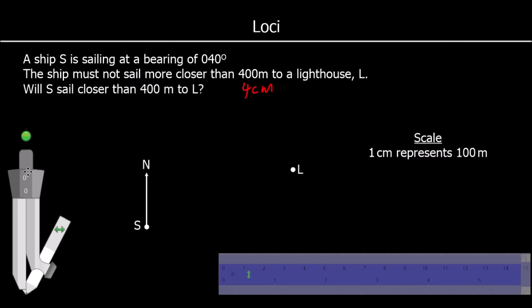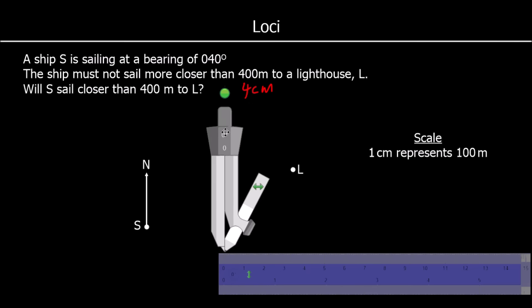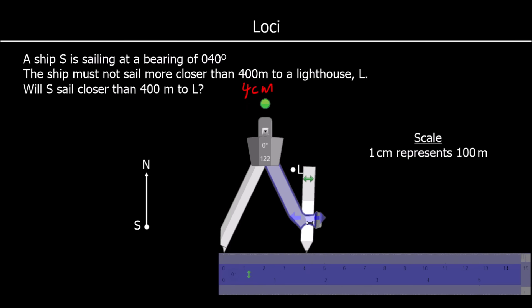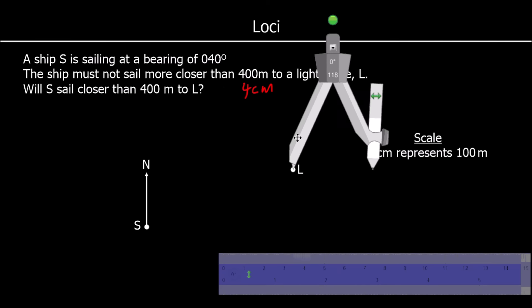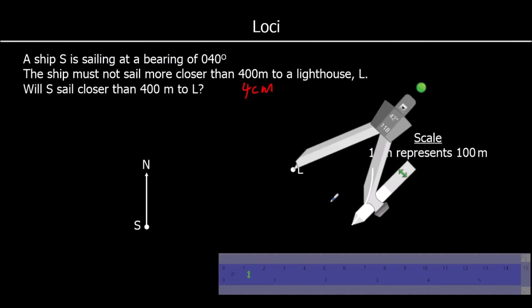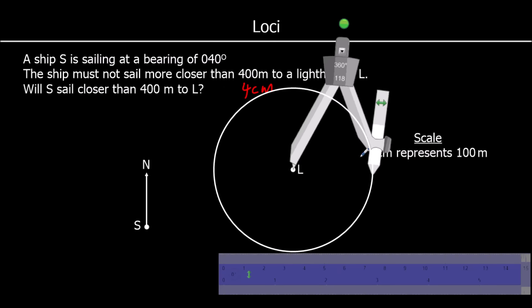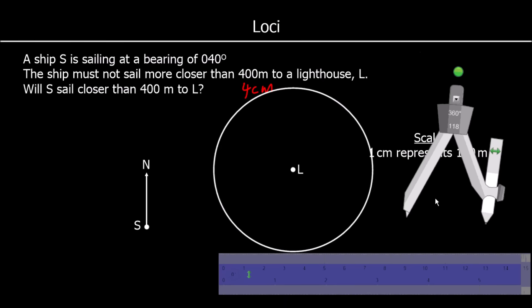So we need to measure 4 cm from L. So there are all the points 4 cm from L. And the ship's on a 40 degree bearing. So bearings are measured from north, north and clockwise.